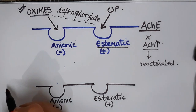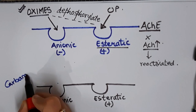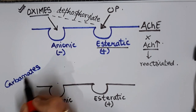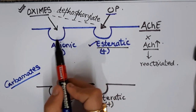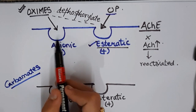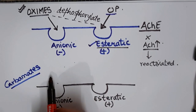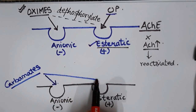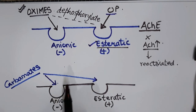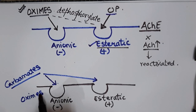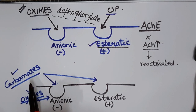Oximes cannot be used in carbamate poisoning because organophosphorus compounds bind only to the esteratic site, leaving the anionic site free for oximes. However, carbamates bind to both the anionic and esteratic sites simultaneously, leaving no anionic site available for oximes to act. Since the site is already occupied by carbamates, oximes cannot bind and therefore cannot produce their action.